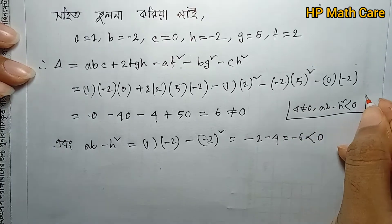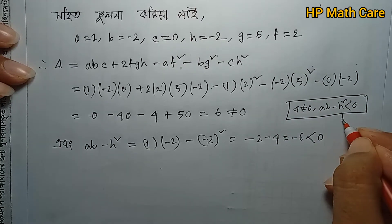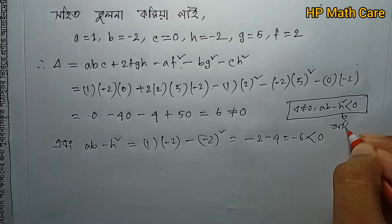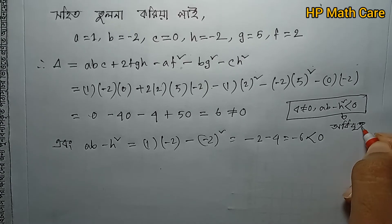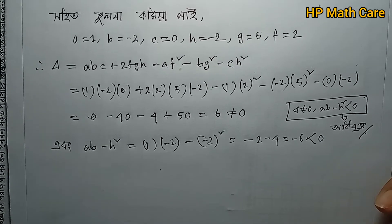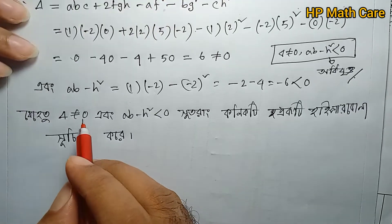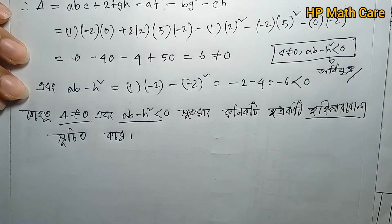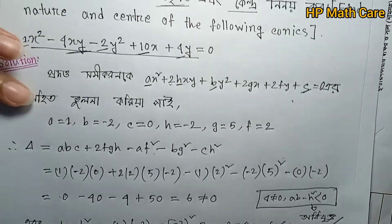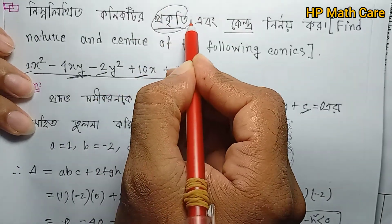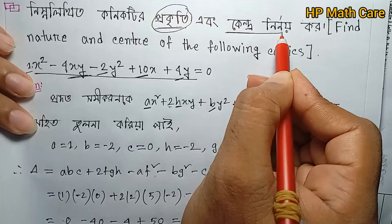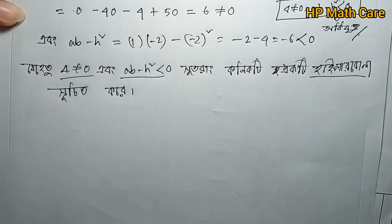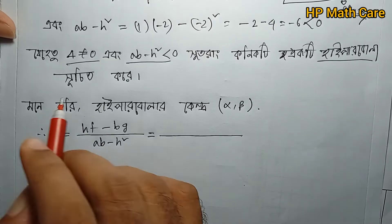Since delta is not equal to zero and ab - h² is less than zero, this represents a hyperbola with a center. Now we find the center coordinates (alpha, beta).